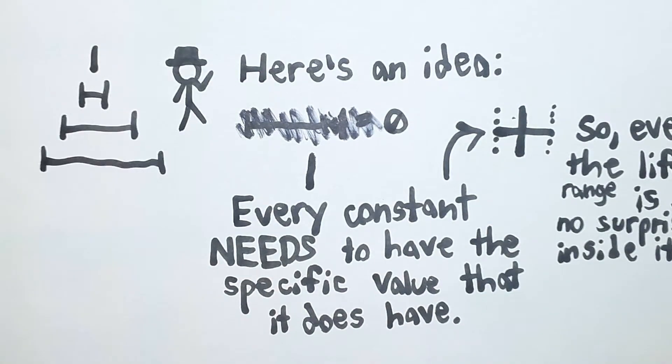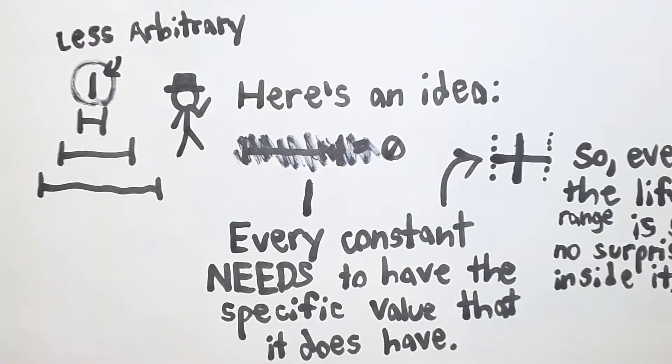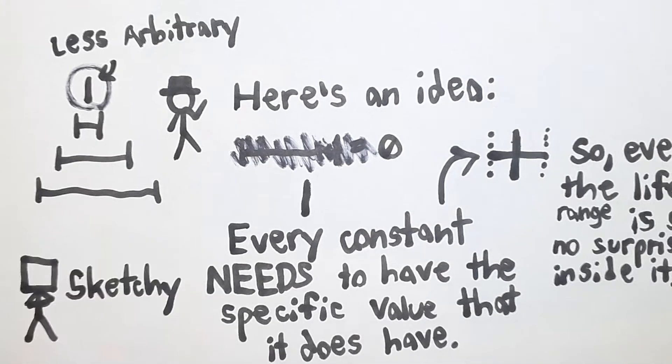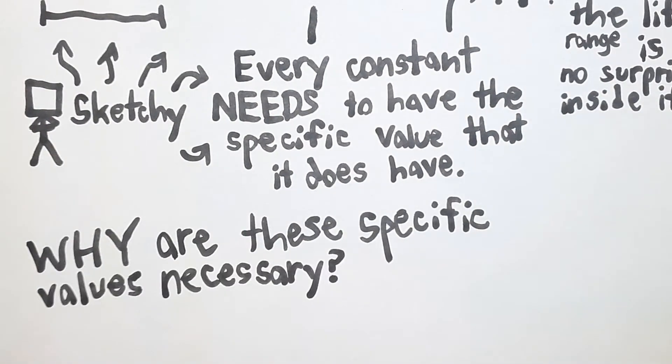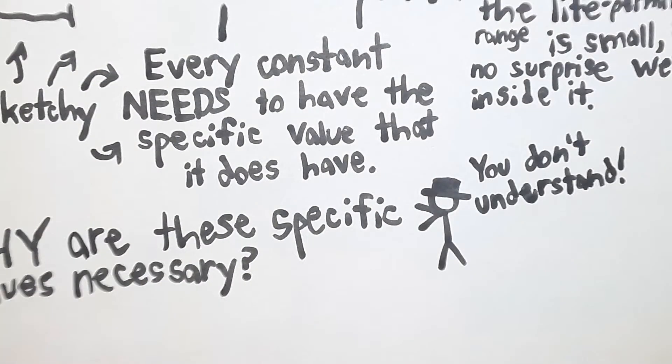The atheists could say that their idea about the possible range of values is even less arbitrary than any other range of values, so it's a perfectly fine way of explaining the data. This argument seems pretty sketchy to me. I could always ask why these specific values are necessary rather than others.